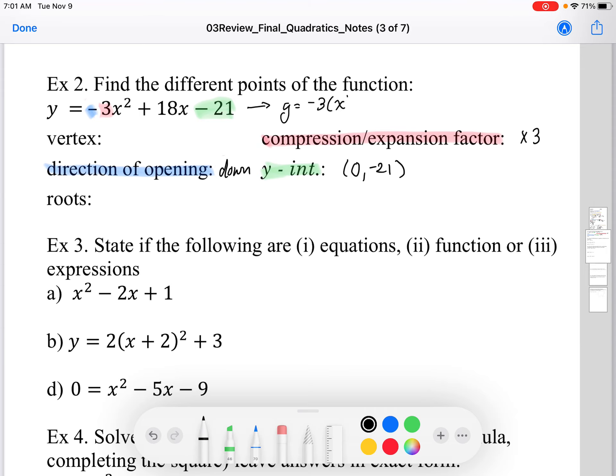Because it shares a common factor of -3 in all the terms. So just watch your sign. So it's going to be x² - 6x + 7. Okay, and this can be factored.